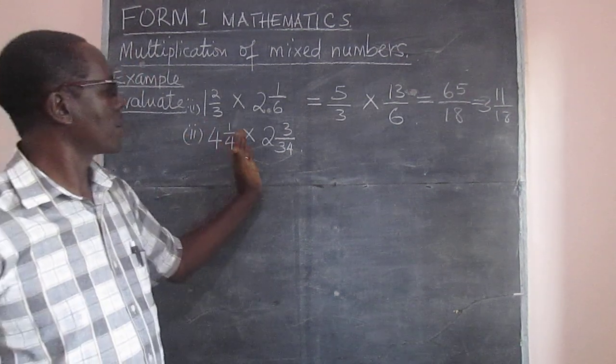So we go to the second part. We have four and a quarter multiplied by two and three over four. So again we change this one by multiplying four by four. That gives us sixteen.